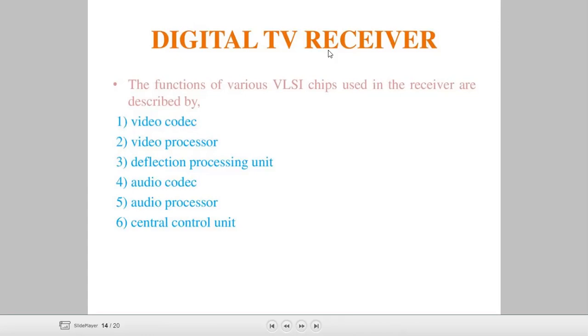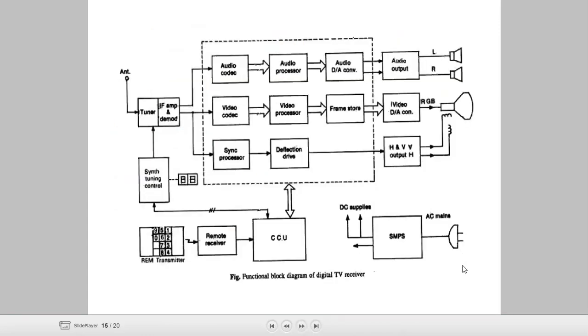Before we have a block diagram, we will see the digital block diagram. This is our digital TV receiver. Now let us see what we have. The antenna here will receive a signal. This is the antenna and the signal will be received.